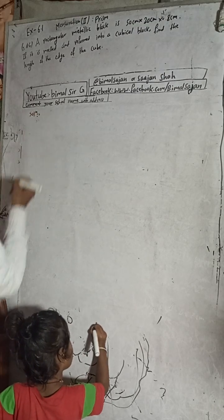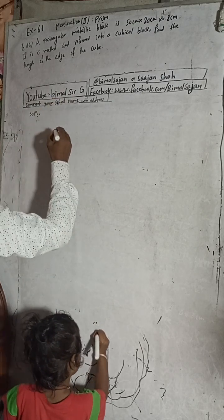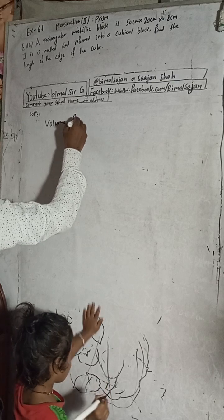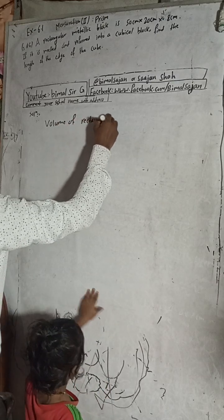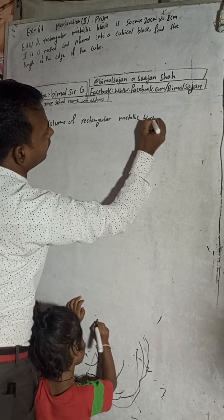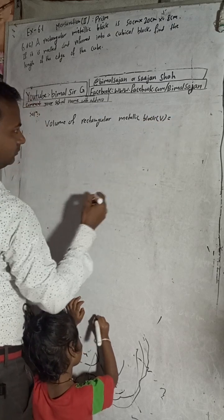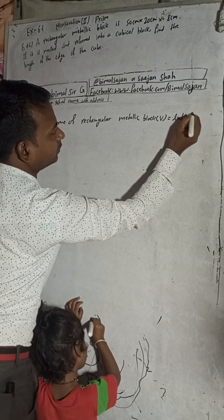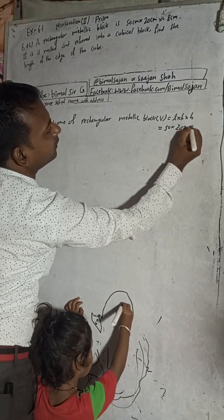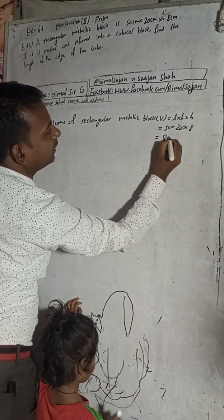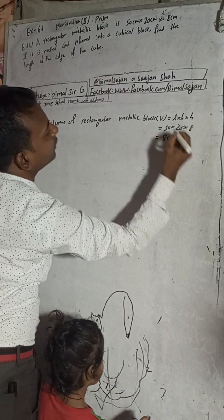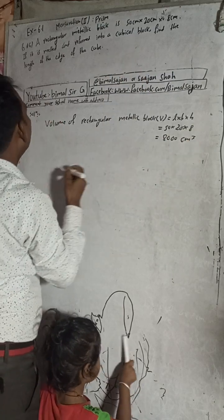So the solution is here. A rectangular metallic block is given. Volume of rectangular metallic block is equal to l × b × h, which is given here as 50 × 20 × 8, so this equals 8000. The unit will be cm³.